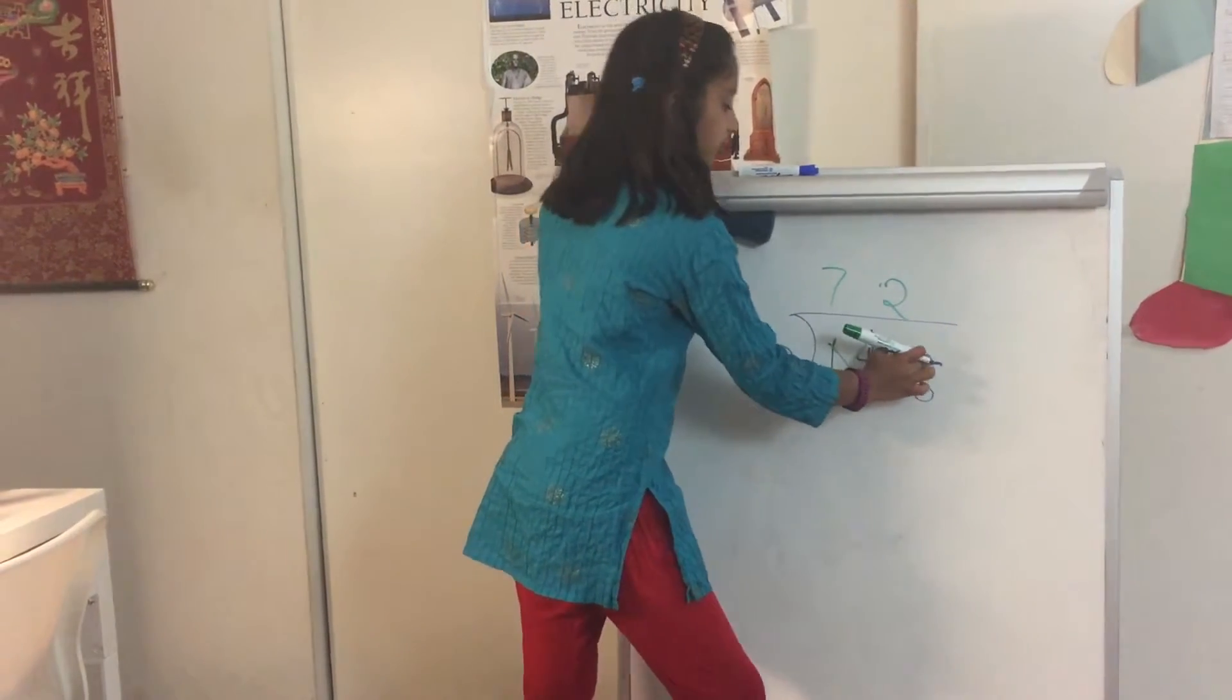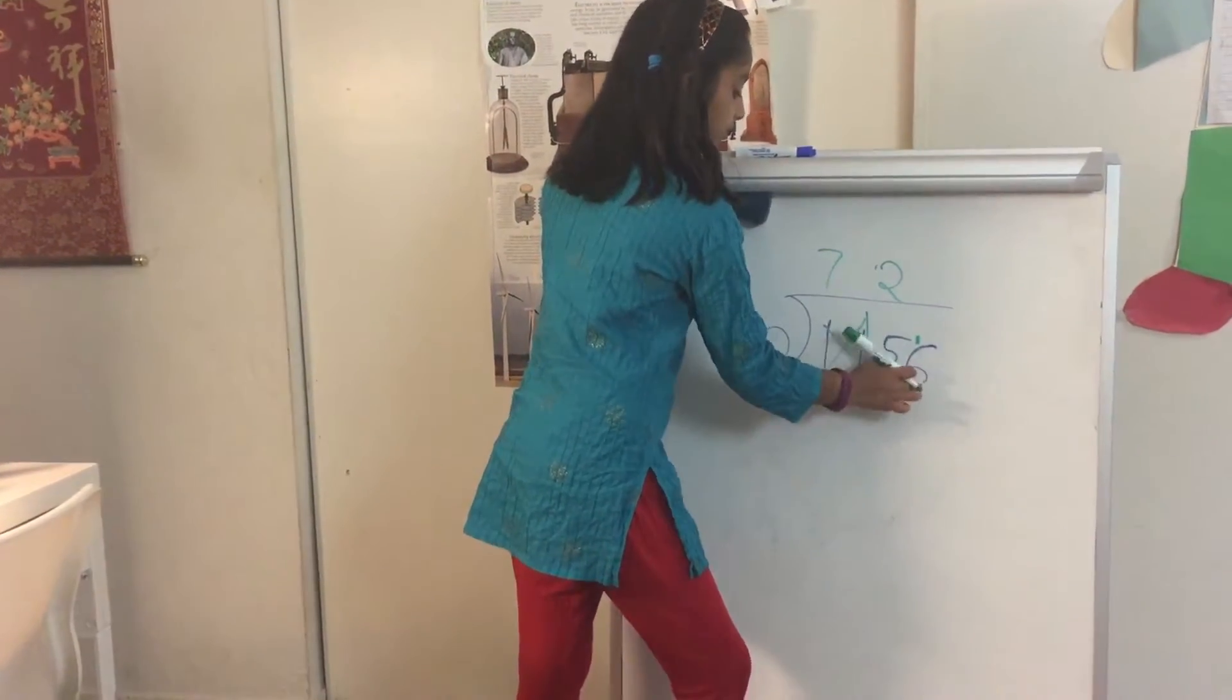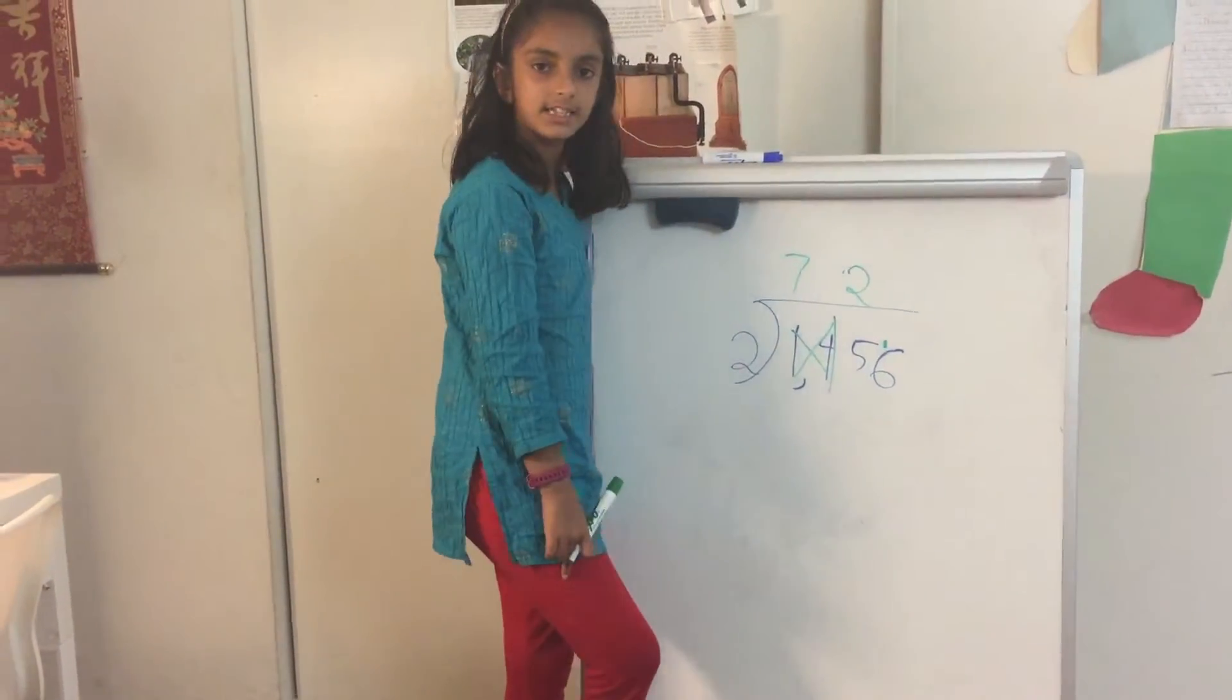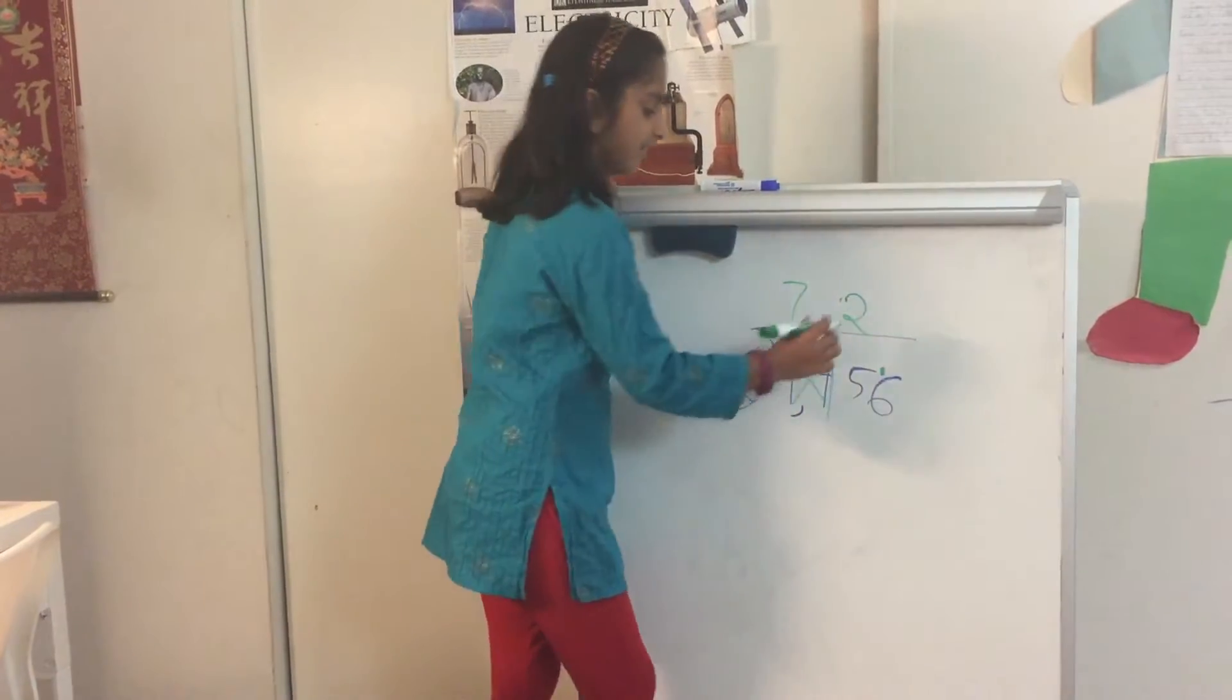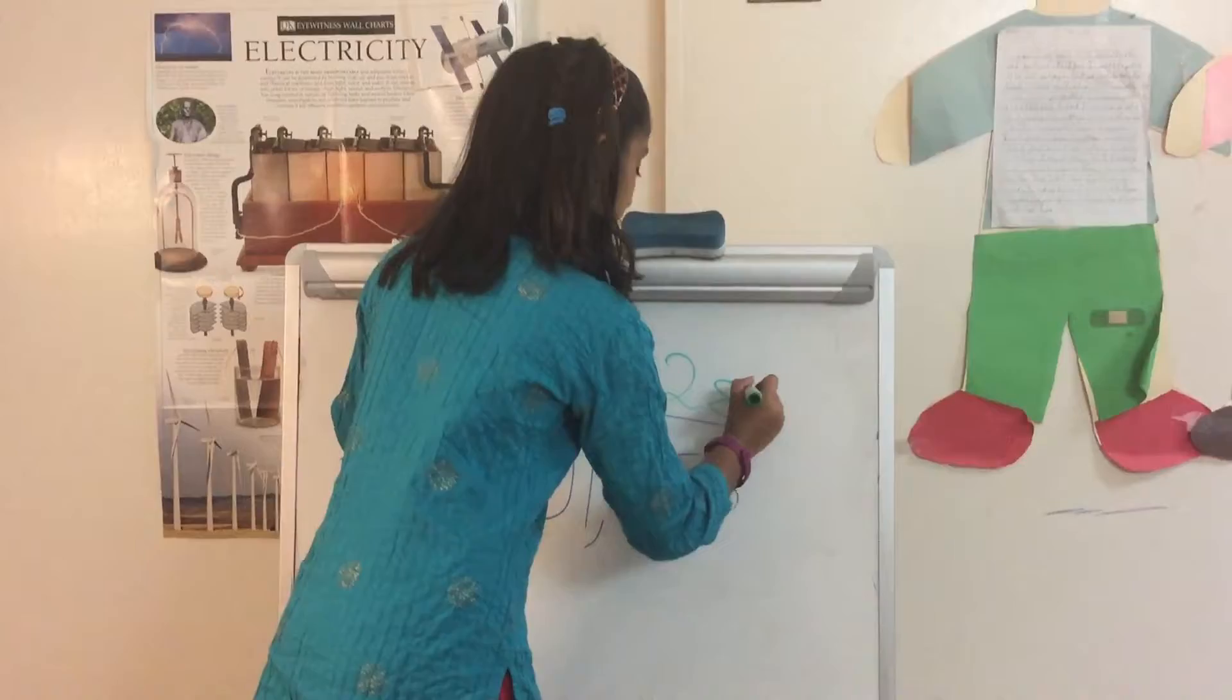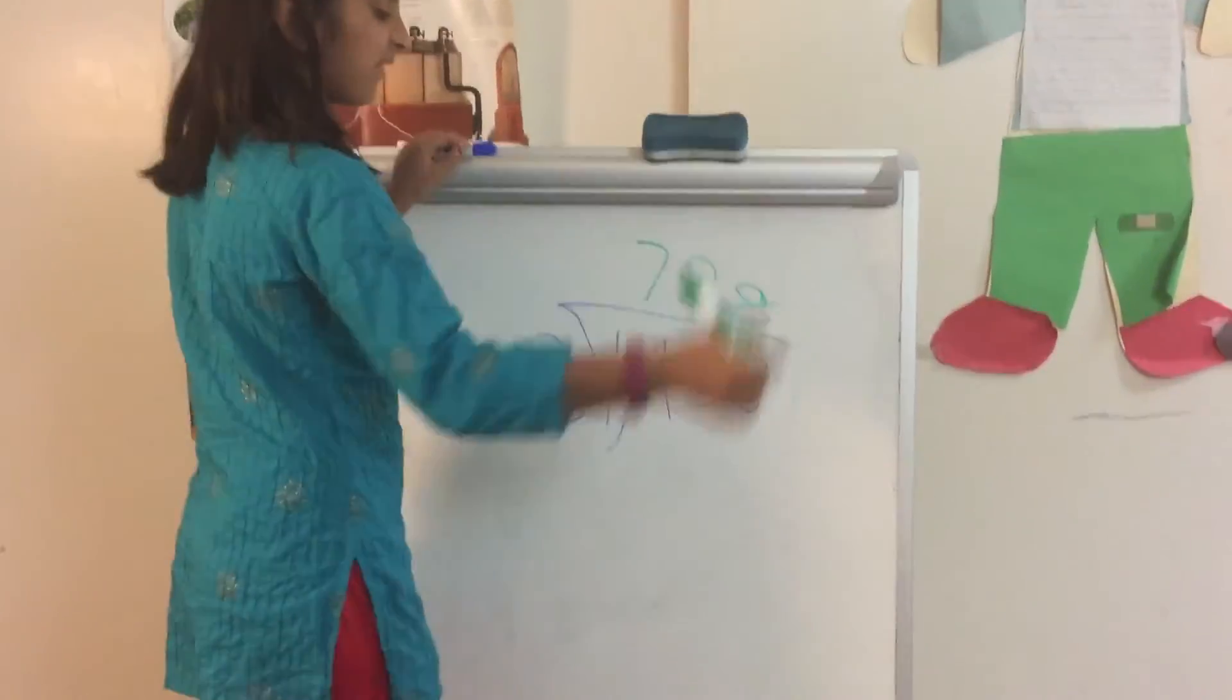So now you do two times what? You use your remainder for the six. Now you do 16. Two times what is the closest to 16? It's eight, right? Two times eight is 16. So you write your eight, and now your answer is 728.